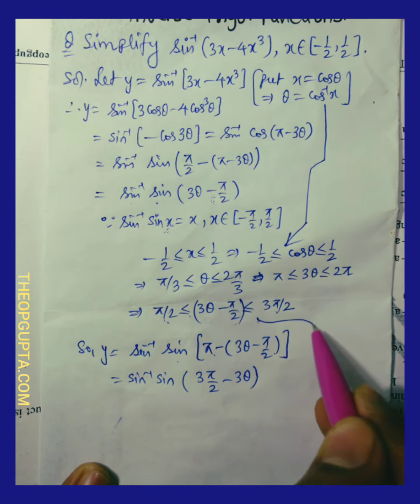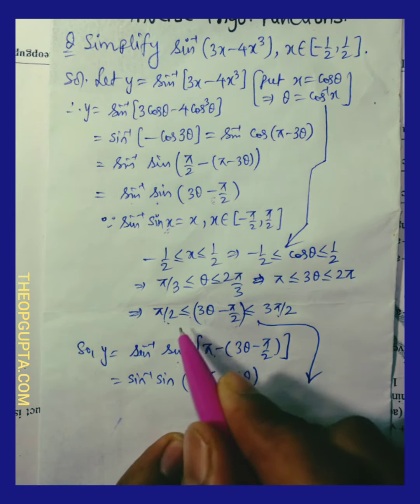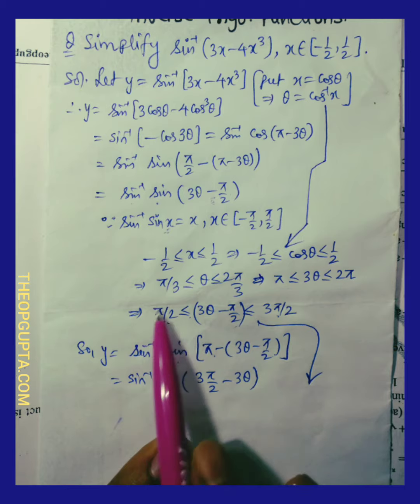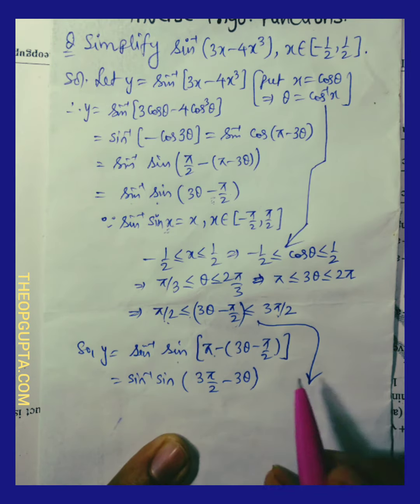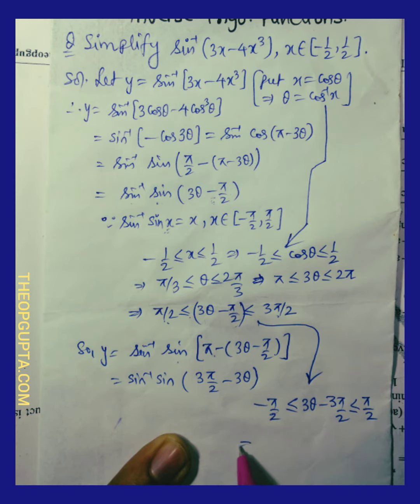Now if you refer to this step once again and just subtract pi from three values, so it will be minus pi by 2, 3 theta minus 3 pi by 2, and this will be pi by 2.